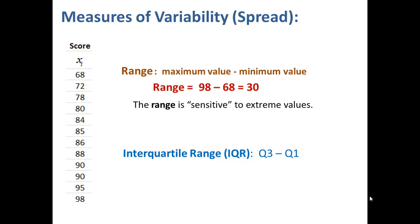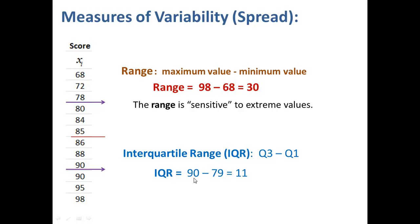Another measure of variability is the interquartile range, or IQR. The IQR is the difference between the third quartile and the first quartile. The median was the average of 85 and 86. The third quartile, Q3, is the middle of the upper half of the data — since there are an even number of values above the median, Q3 is the average of 90 and 90, or 90. Q1 is the middle of the bottom half, which is the average of 78 and 80, or 79. So the IQR is Q3 minus Q1 = 90 − 79 = 11.